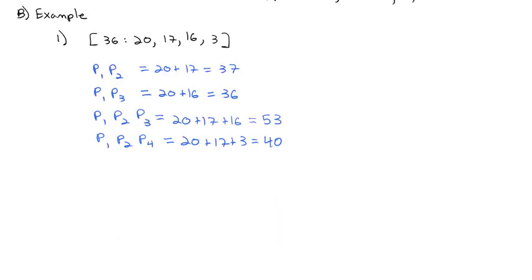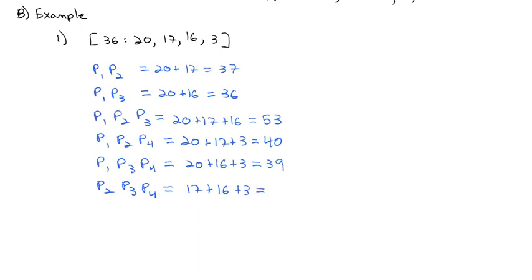We can also meet quota if Player 2 is missing: Player 1, Player 3, and Player 4 give 20 plus 16 plus 3, which is 39 votes — more than quota. We don't need Player 1 either: Player 2, Player 3, and Player 4 give 17 plus 16 plus 3, which is exactly 36 votes, meeting quota. And of course, if everyone votes together — Player 1, 2, 3, and 4 — that's 20 plus 17 plus 16 plus 3, which is 56 votes, way more than quota.